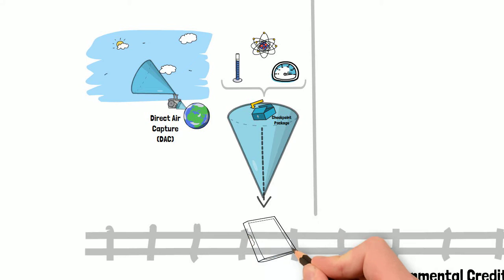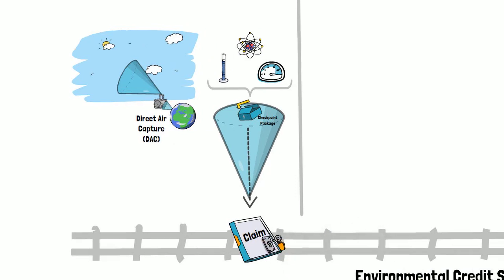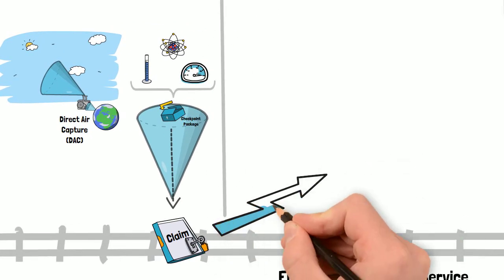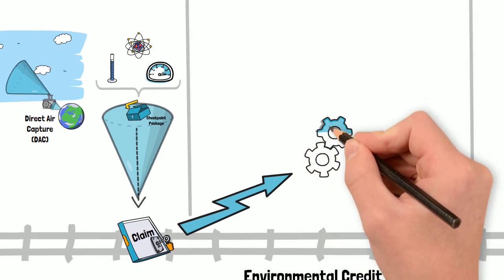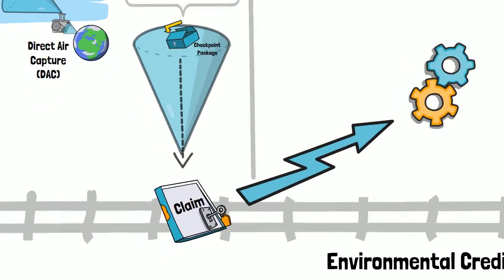The claim is built throughout the carbon removal activity, with evidence being cryptographically secured so that its provenance and authenticity are guaranteed. Once the carbon removal activity is complete, the claim is automatically submitted for verification on the network and picked up by the verifier for processing.